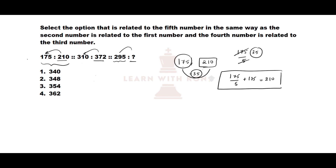Let us verify for the second set of numbers, which is 310 and 372. What we have to do here is 310 divided by 5, plus 310. 310 divided by 5 is 62, so 310 plus 62 equals 372, which verifies our pattern.